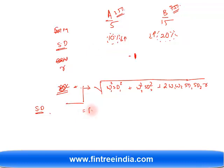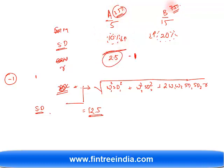Correlation always falls between minus one and plus one. A correlation of minus one means perfect negative correlation and therefore the maximum benefit of diversification — you achieve the lowest possible standard deviation. With correlation of −1, there is a shortcut: 25% × 10 = 2.5 and 75% × 20 = 15; then 15 − 2.5 gives you 12.5% directly.